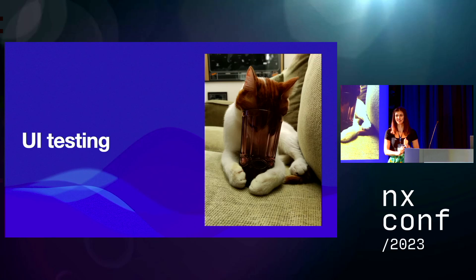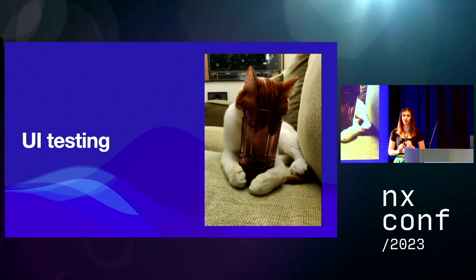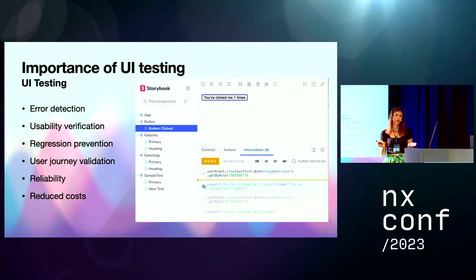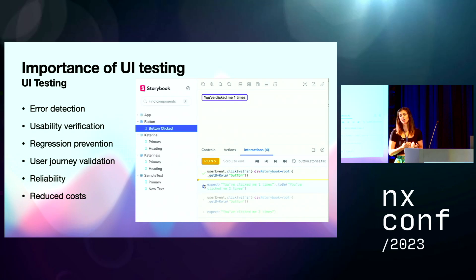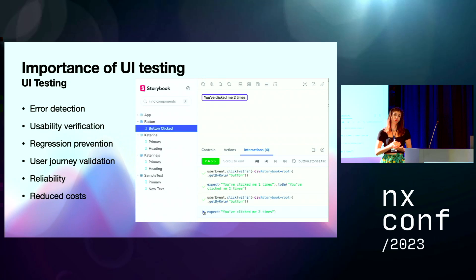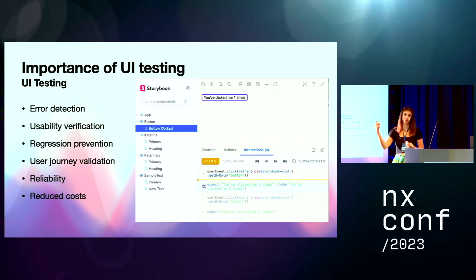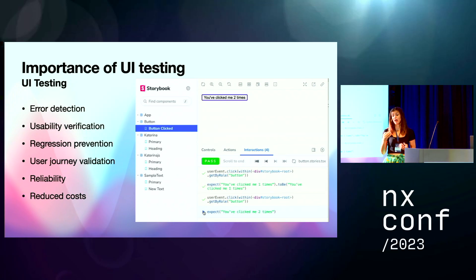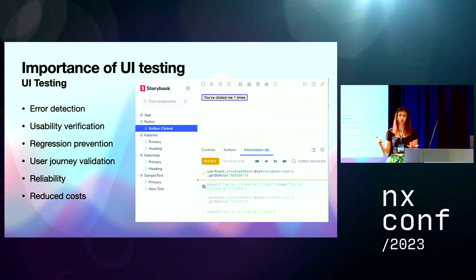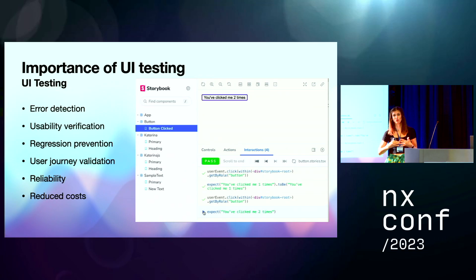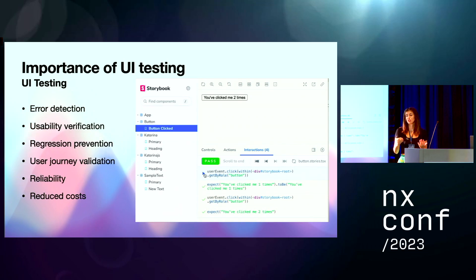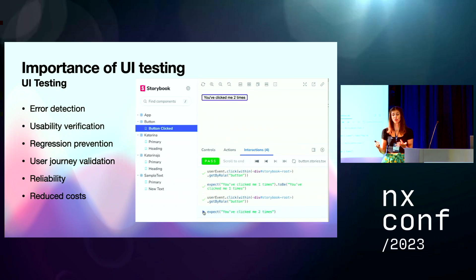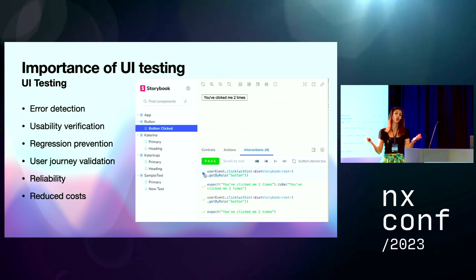Let's start with UI testing. The importance of UI testing — it's all about error detection: identify bugs and errors before software reaches the end user. Usability verification: you verify that what you want to do actually works. Regression prevention helps identify any adverse effects due to changes in the code base. User journey validation validates that your user journey is what you want it to be. It also improves reliability and reduces costs, because if you detect issues early in the development cycle, you reduce the cost and effort required for fixing bugs.